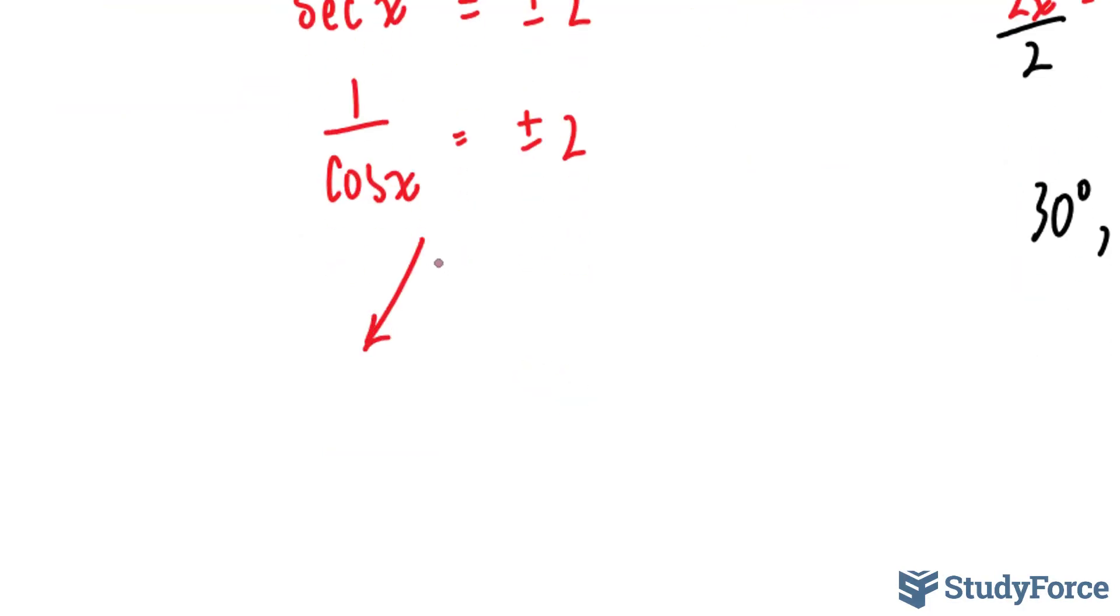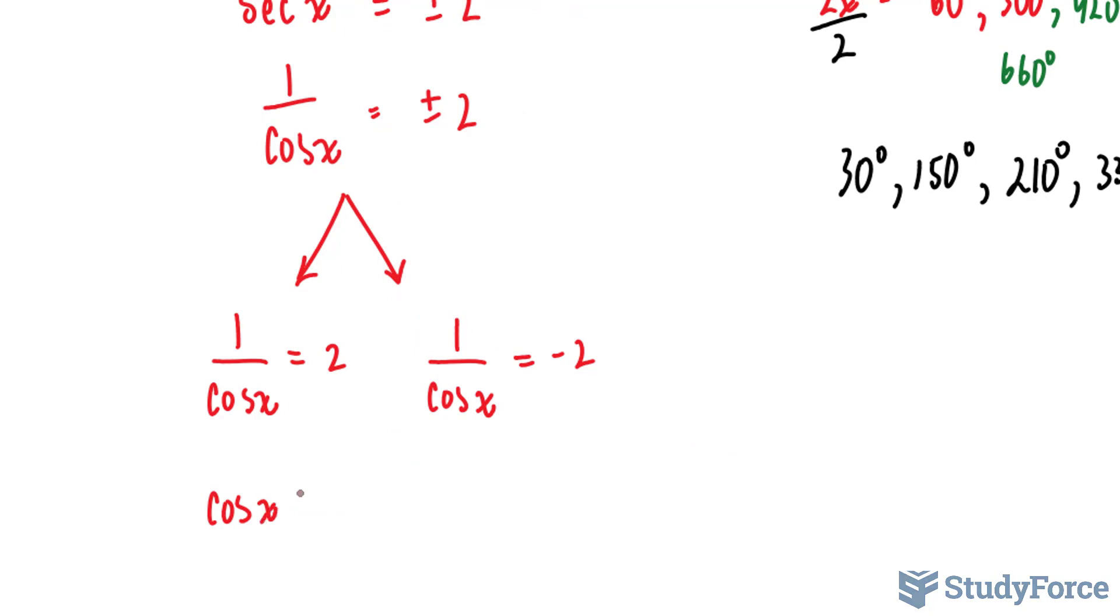I'll branch this into two parts, where one part is cosine x. 1 over cosine x is equal to positive 2. And the other branch is 1 over cosine x is equal to negative 2. And I'll solve for cosine x in both of these situations. Solving for cosine x here, I end up with cosine x is equal to half. And over here, I'll end up with cosine x is equal to negative 1 over 2.